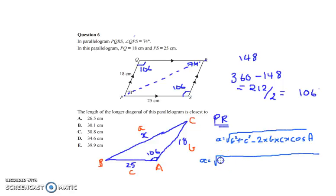So B is 18. So 18 squared plus 25 squared minus 2 times B is 18 times C is 25 times cos A, which is 106.